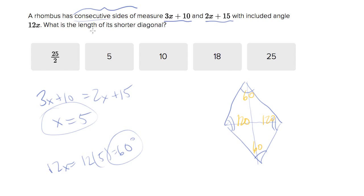And what they've asked for is what is the length of the shorter diagonal? Well, if you know that one of the sides has length 5... I'm sorry, the length is not 5, x is 5. The side measures 3 times 5 plus 10, so that would be 15 plus 10 is 25.